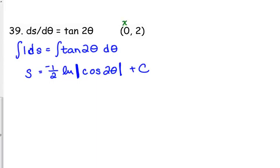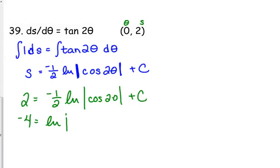We need the particular solution. That would be theta and s in this case. 2 is equal to negative one half natural log of the absolute value of cosine of 2 times 0. I'm going to go ahead and move that negative one half to the other side, so multiply by negative 2. We've got negative 4 is equal to the natural log of the cosine of 0 is 1. And the natural log of 1 is 0, so negative 4 is our c.